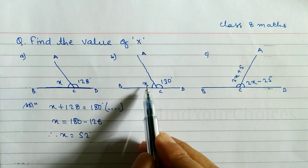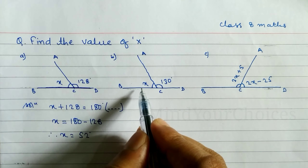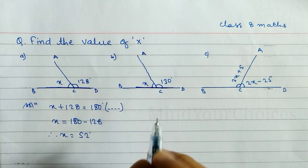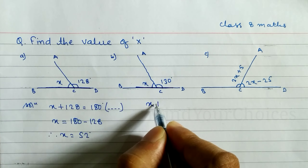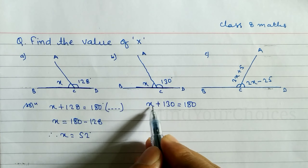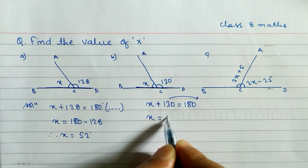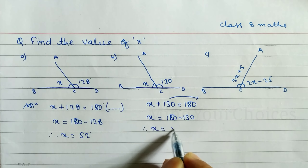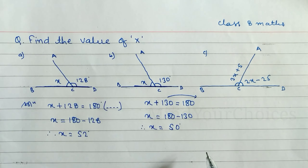Similarly, in question number b, x and 130 are given. When you add these two angles we get 180 degrees. You can write 'being supplementary angle', 'being straight line', or 'straight angle' as the reason. So we write x plus 130 degrees equals 180. Since these are unlike terms, x is equal to 180 minus 130, which gives x equal to 50.